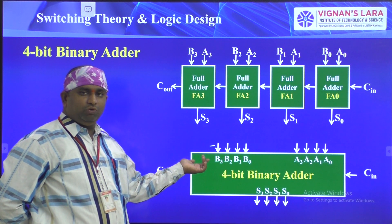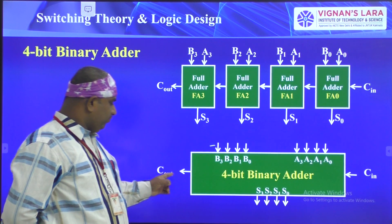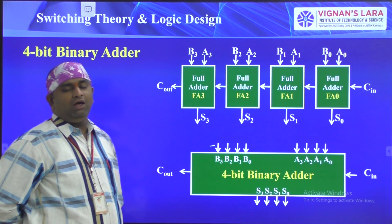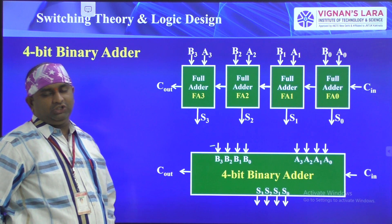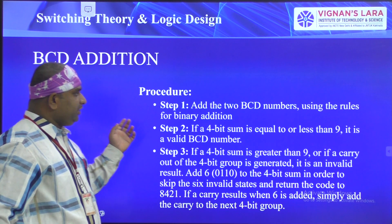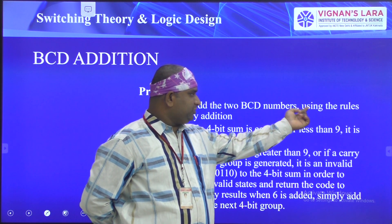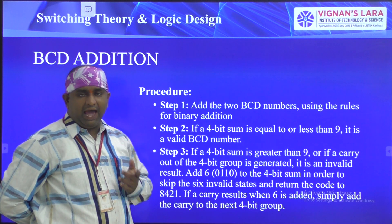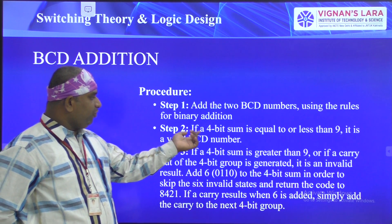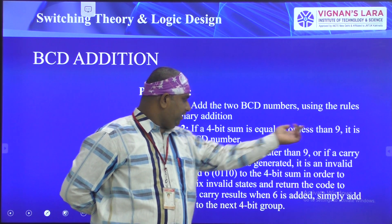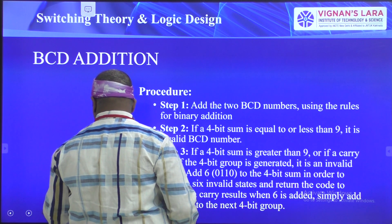The block has inputs a3 a2 a1 a0, b3 b2 b1 b0, a carry-in (C-in), and outputs s3 s2 s1 s0 with a carry-out (C-out). Using this four-bit binary adder block, we draw the BCD addition diagram. Step one: add the two BCD numbers using binary addition rules, using a four-bit binary adder.